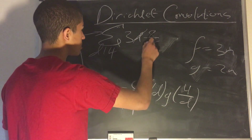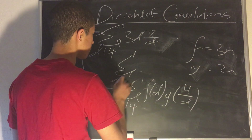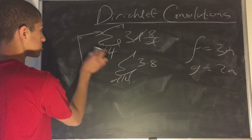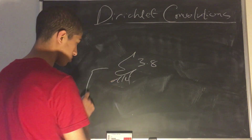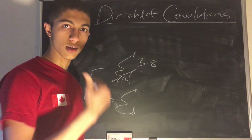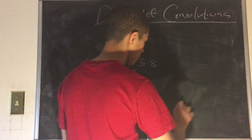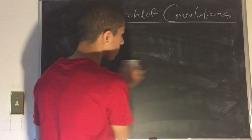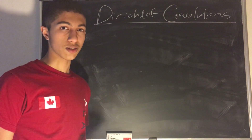The d's cancel out, and this simplifies to the sum over d divides 4 of 3 times 8, which is 24. The divisors of 4 are 1, 2, and 4 — so there are 3 divisors. We have the sum of 24 over 3 elements, which equals 24 times 3. So we have successfully computed a numerical problem involving a Dirichlet convolution.